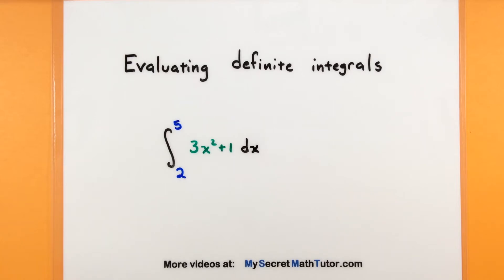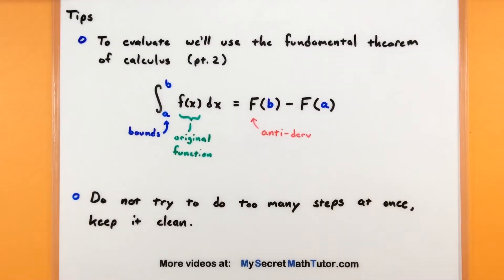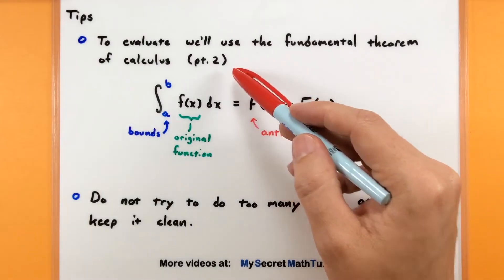Welcome to my secret math tutor. It's come to my attention that I've been doing lots of integrals, but I still haven't tackled definite integrals, so it's time to do just that. In order to evaluate a definite integral, we're essentially using the fundamental theorem of calculus, what some people would call the FTC part 2. The way that works is you're going to find the antiderivative of this original inside function, and then you're going to plug in the top and bottom bounds and subtract the two.